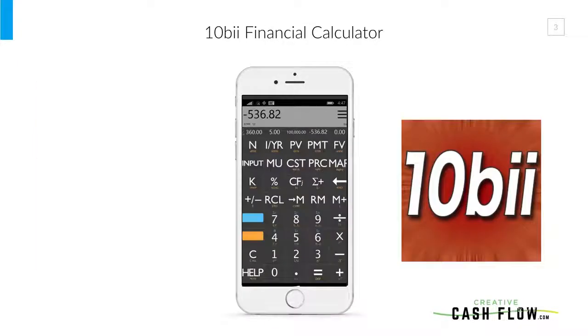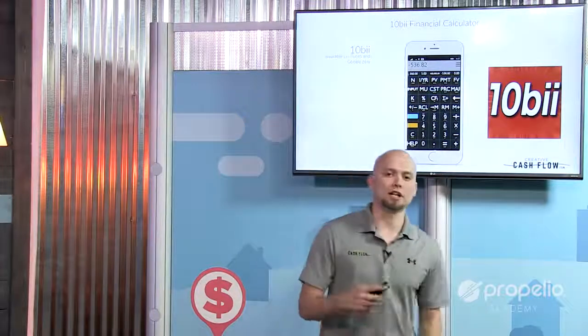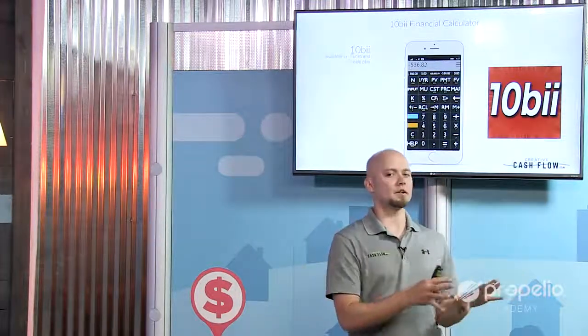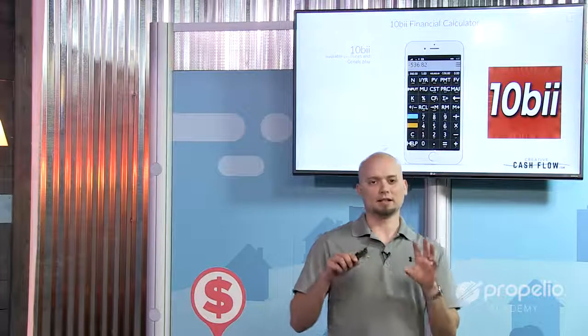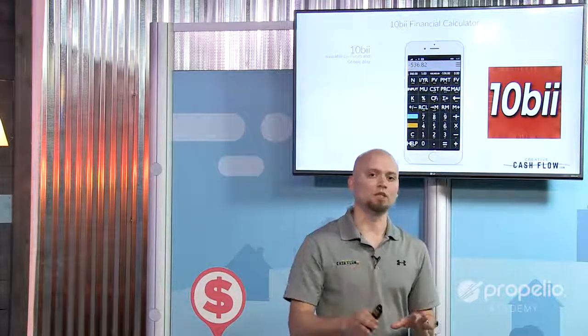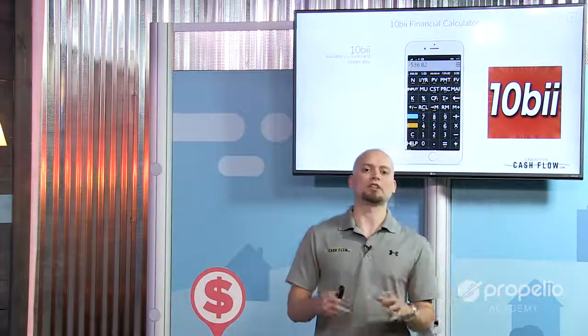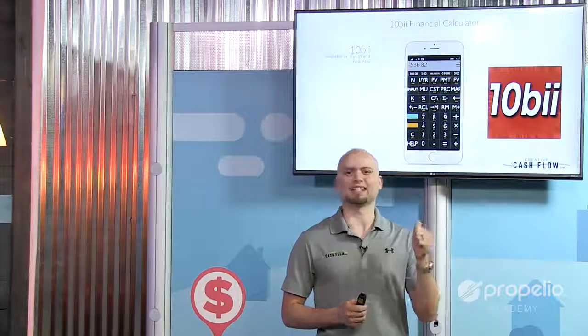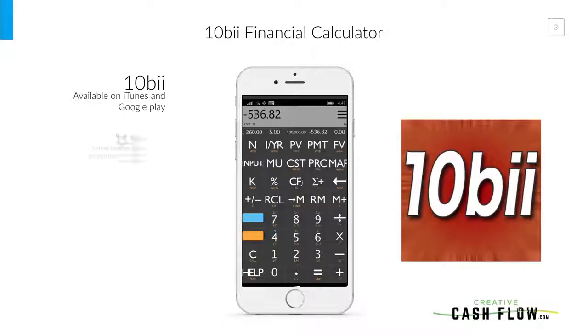The 10B2 financial calculator — this is something you've got to go out and get. This is the lifeblood of our industry, and it's available on iTunes and Google Play. The 10B2 is the one I've chosen to use and I'll show you screenshots of it. I suggest you get this one — I've worked a lot of them and I have my reasons for liking it, which I'll get into in our 10B2 calculator tutorial video. You can also use a 12C or physical ones — any financial calculator should work.